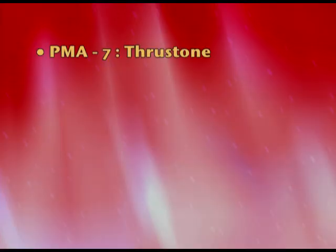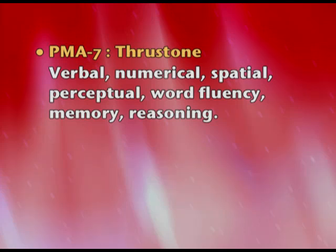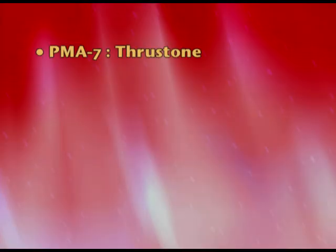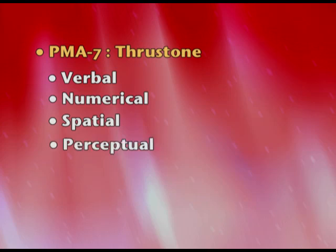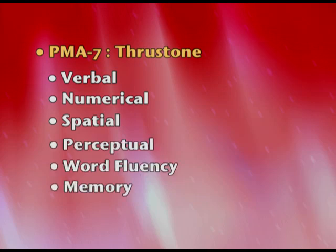The third theory says that intelligence comprises of seven factors. This was given by Lewis Thurston and is called Primary Mental Abilities. Spearman's S factor and Thurston's theory were the basic foundation for aptitude testing, which we will study later. The seven abilities are: verbal, numerical, spatial, perceptual, word fluency, memory, and reasoning.